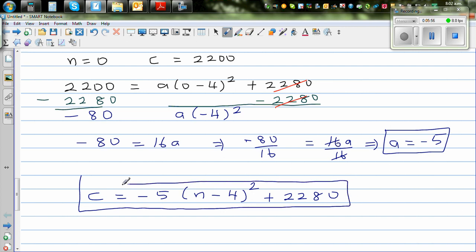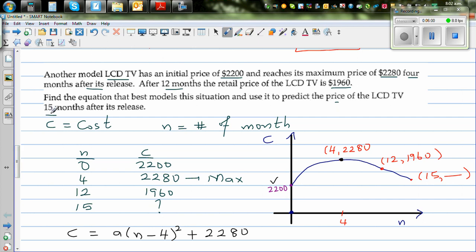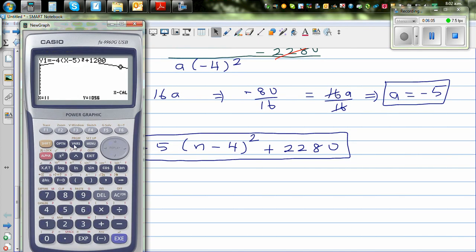Now what we're going to do is answer the question: what's the price after 15 months? Let's confirm this. Go to your graphic calculator and type in the equation. That is minus 5 times (X minus 4) squared plus 2280.